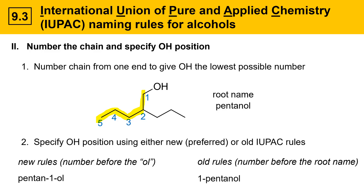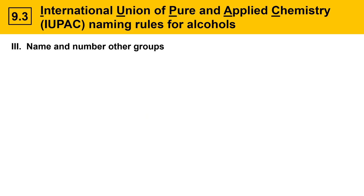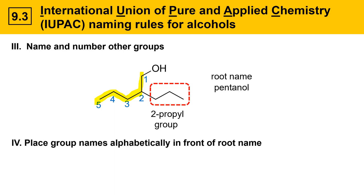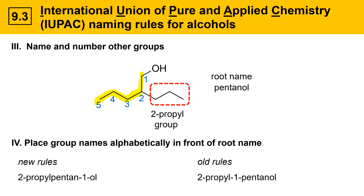The third step in naming alcohols is to name and number the other groups on the molecule. Our pentanol example has one substituent: a propyl group at the 2-position, so it's a 2-propyl group. Place the groups alphabetically in front of the root name — the same process as in alkane nomenclature. Under the new rules this molecule is named 2-propylpentan-1-ol; under the old rules it would be 2-propyl-1-pentanol. The only difference is the location of the number one.